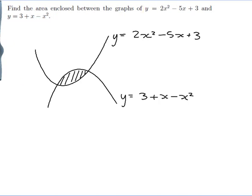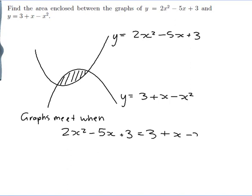Well how am I going to calculate that area? I have a feeling that I'm going to need to know where the two graphs meet. And the two graphs will meet when the formulas come out to the same answer. So the graphs meet when 2x squared minus 5x plus 3 is equal to 3 plus x minus x squared.